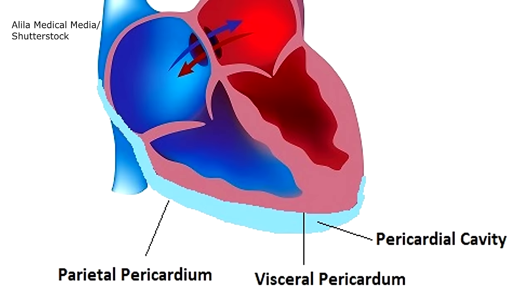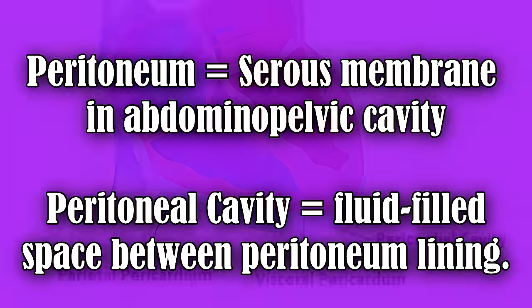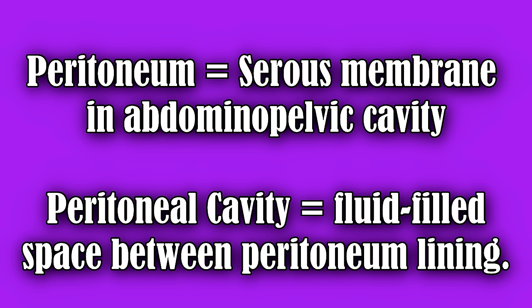Same with the heart: the pericardium is the lining of the membrane around the heart, and the fluid-filled space inside that lining is the pericardial cavity. And the peritoneum is the lining portion in your abdominal pelvic cavity, while the fluid-filled serous fluid inside is called the peritoneal cavity.